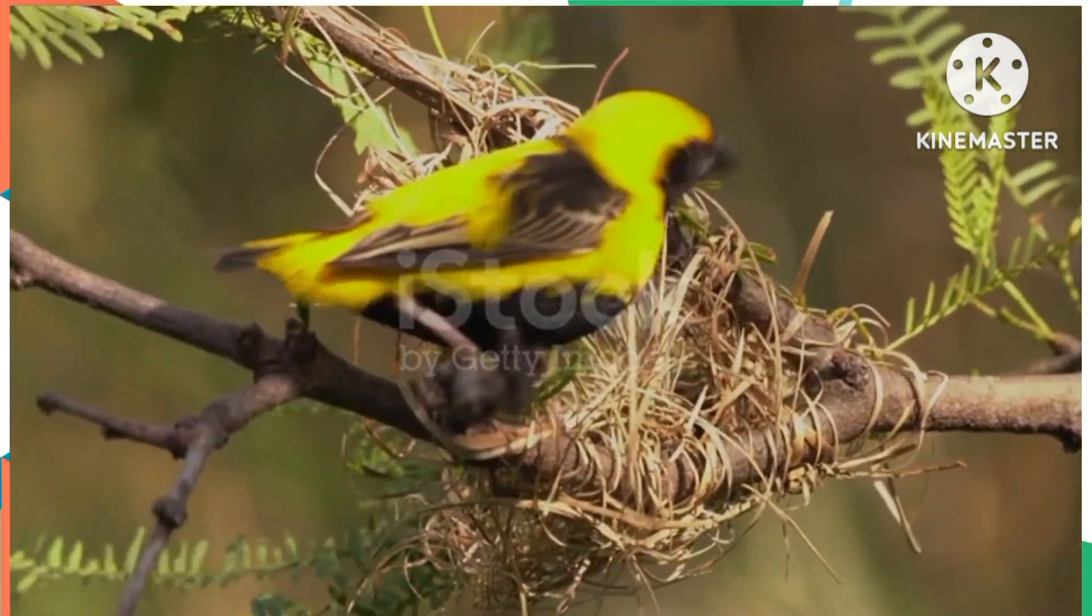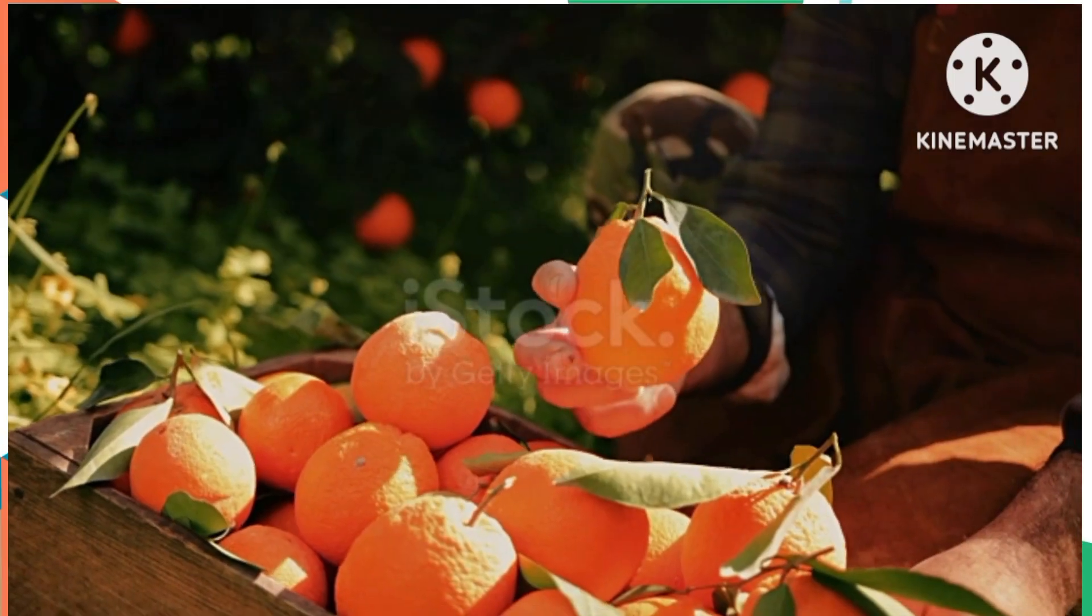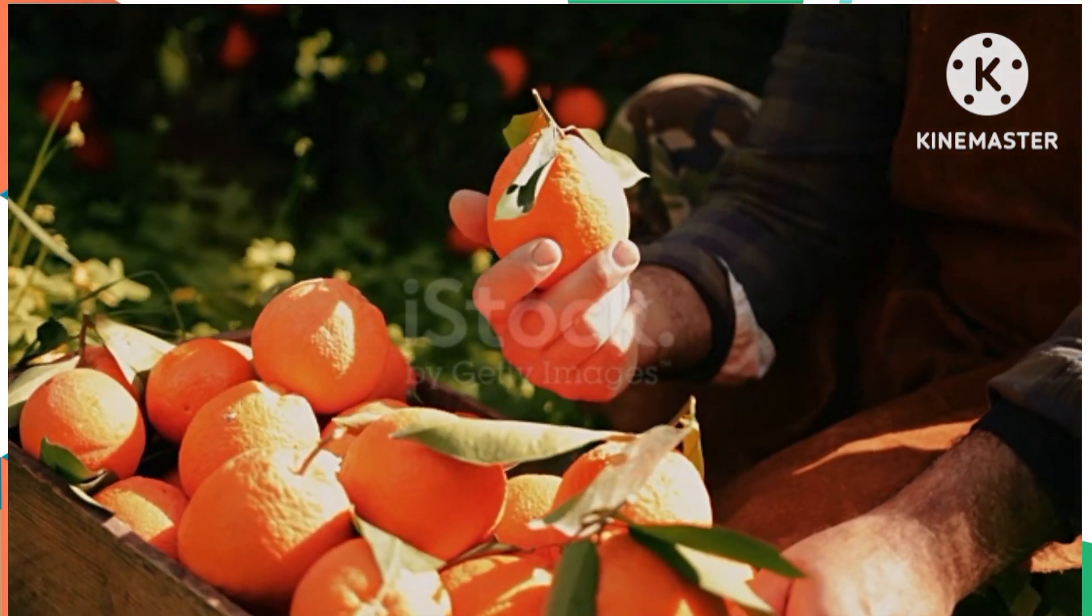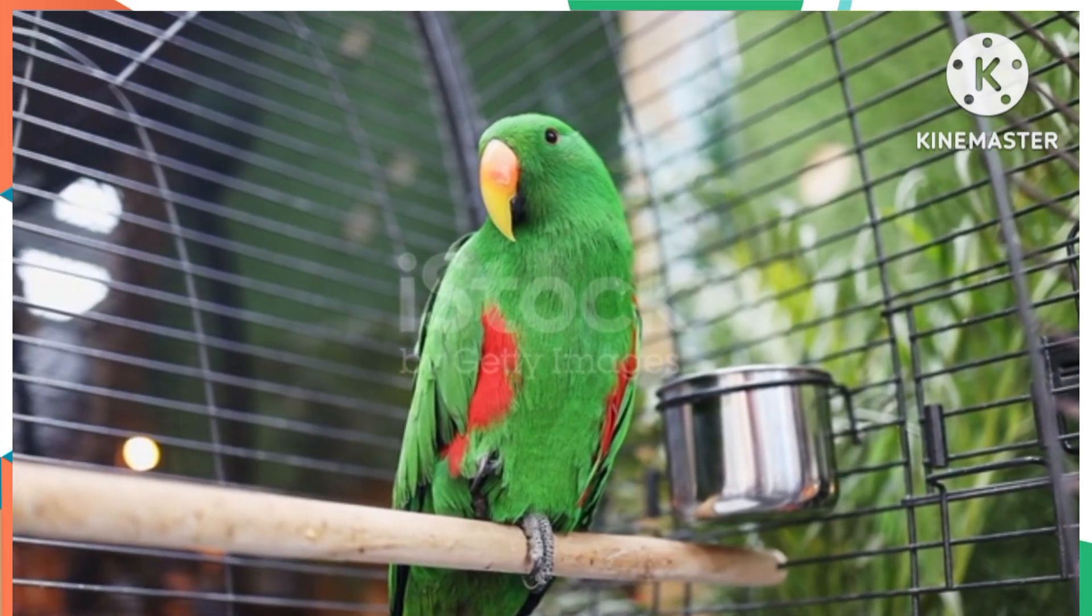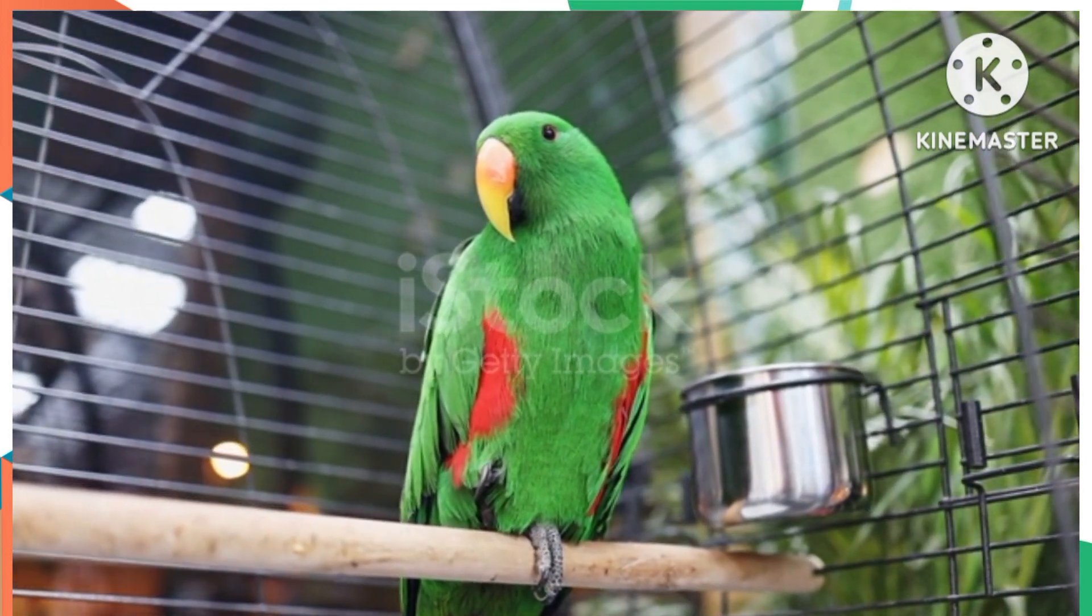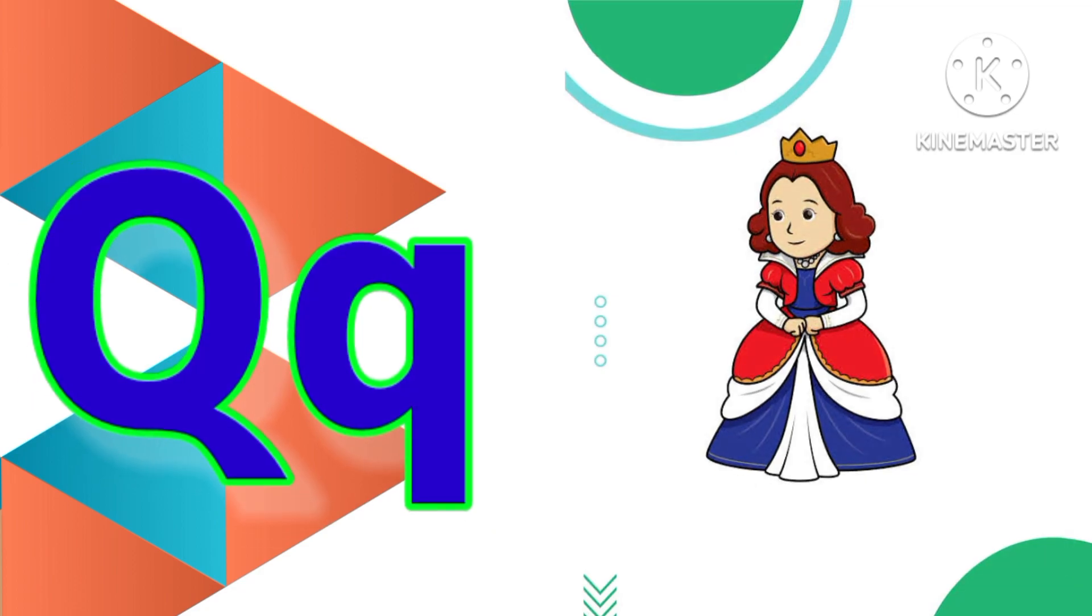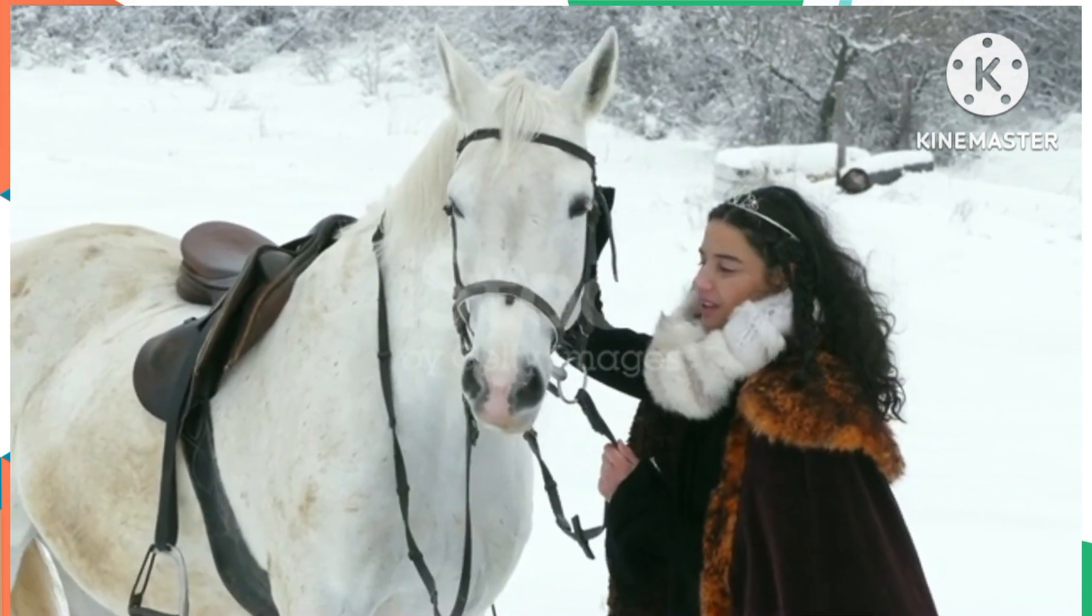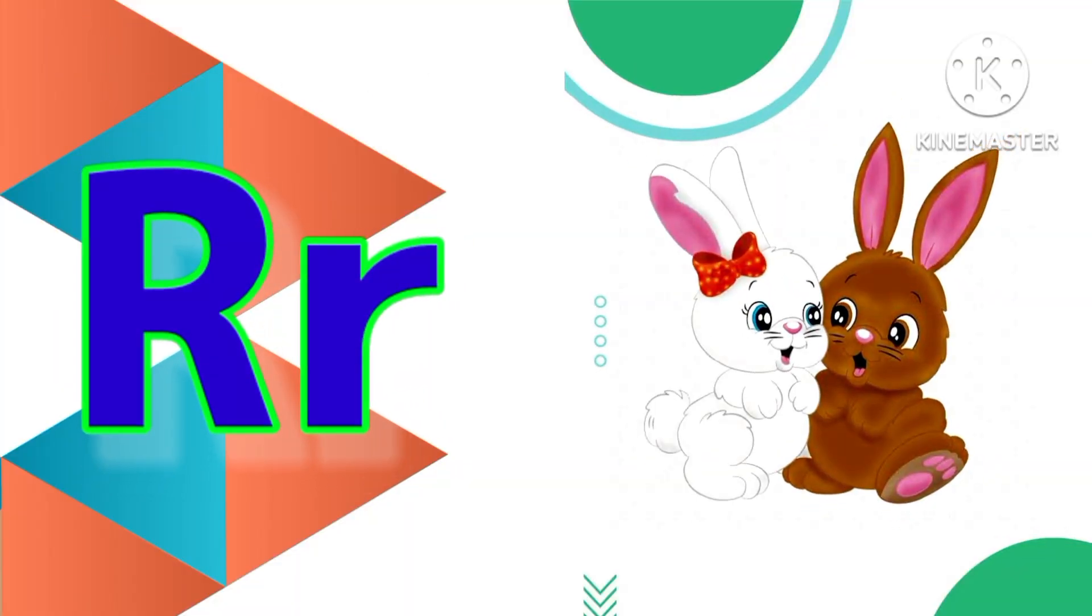N is for Nest. O is for Orange. P is for Parrot. Q is for Queen. R is for Rabbit.